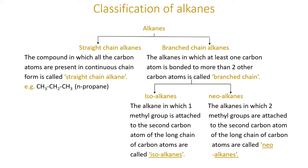Straight chain alkanes: The compound in which all the carbon atoms are present in a continuous chain form is called straight chain alkane. For example, n-propane has three carbon atoms in a straight line, making it an example of a straight chain alkane.